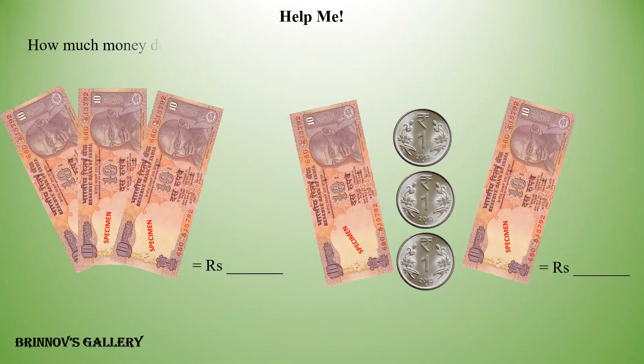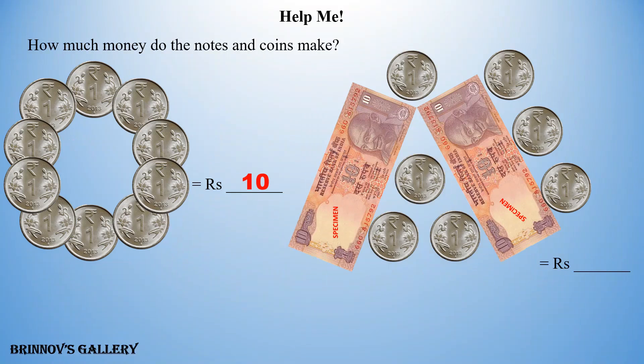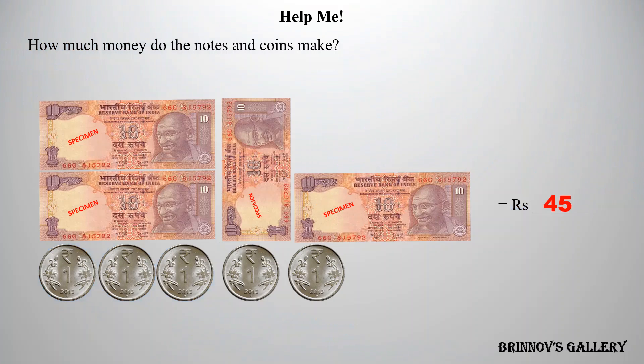How much money do the notes and coins make? 30 rupees. 23 rupees. 10 rupees. 27 rupees. 45 rupees.